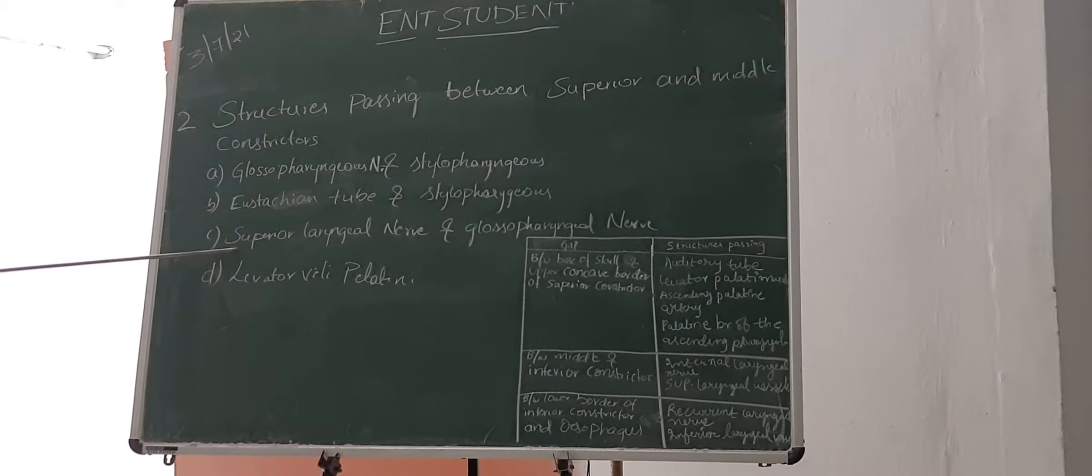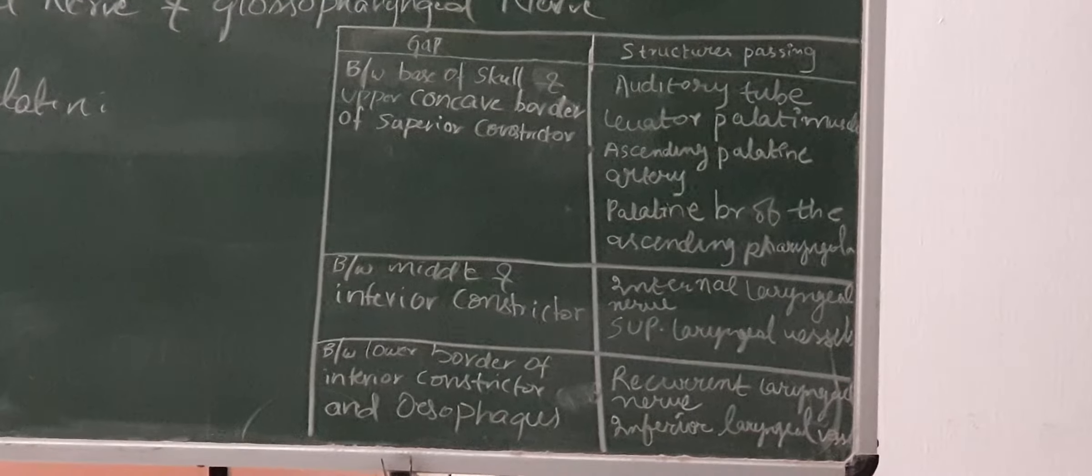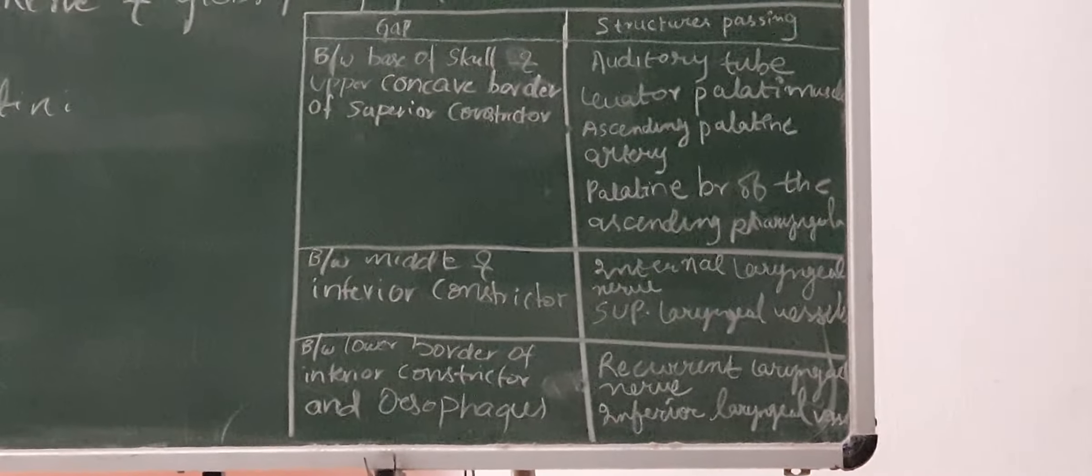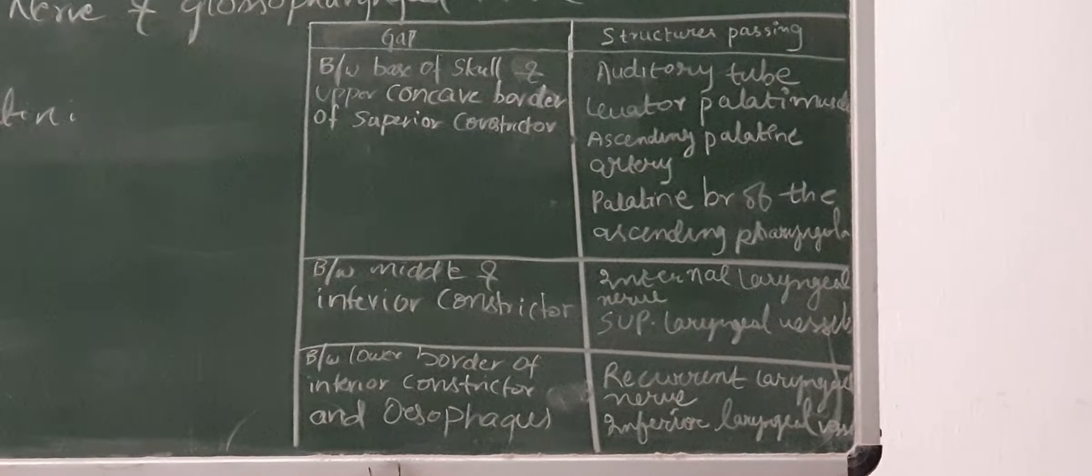Gap between the base of the skull and superior constrictor, what are the structures there? So gap between the base of the skull and superior constrictor muscles, what are the structures passing?